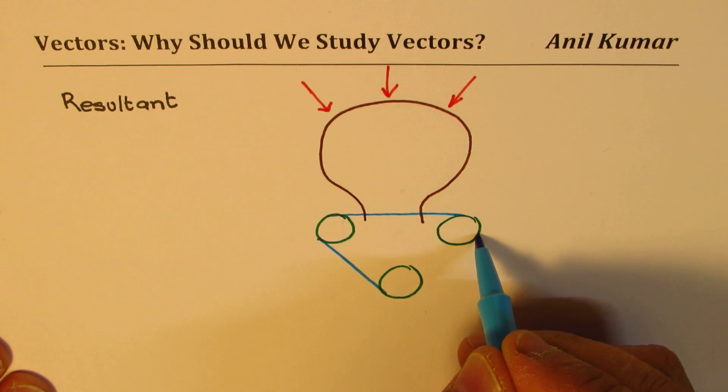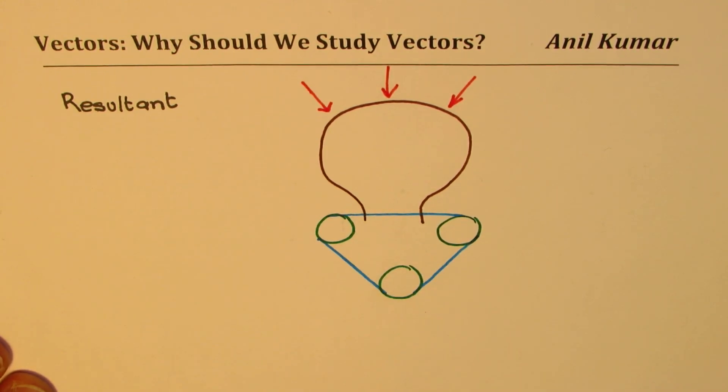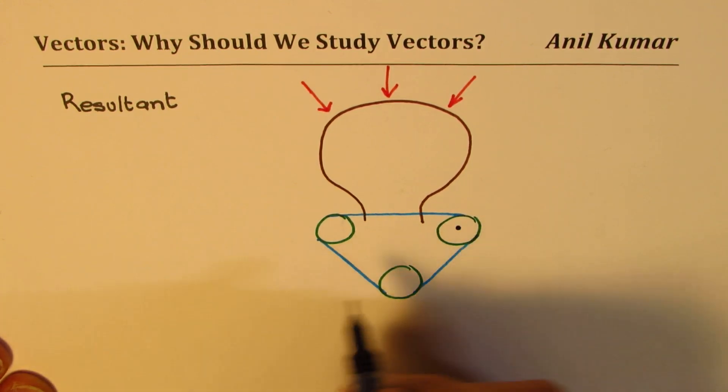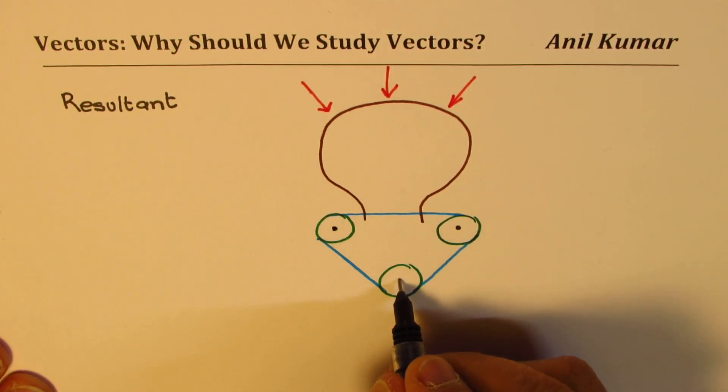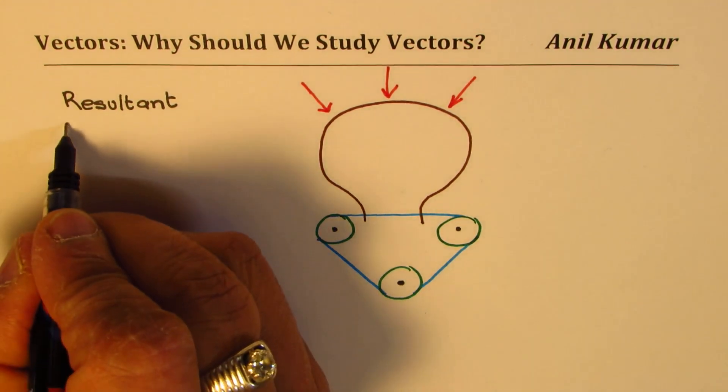If you fail to do one, the system will collapse. So how do we maintain the equilibrium?